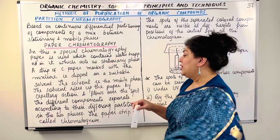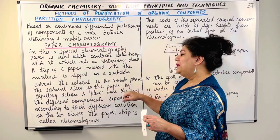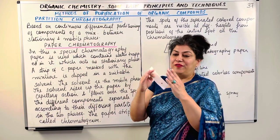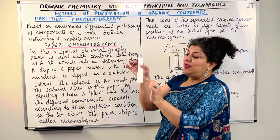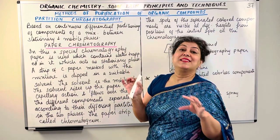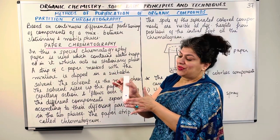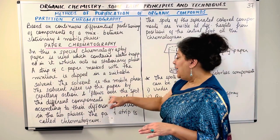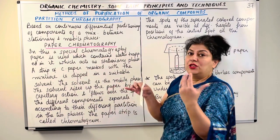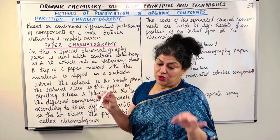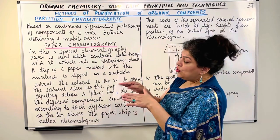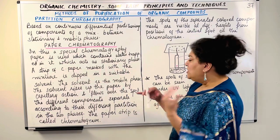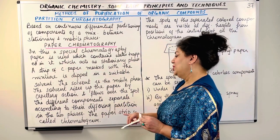The solvent is the mobile phase. As the solvent rises up the paper, it does so by capillary action. The paper is woven in such a fashion that the holes in each weave act as capillaries, so the solvent starts rising due to capillary action on the chromatography paper. It rises and flows over the spot. The spot consists of a compound soluble in the solvent — I chose water because this ink is soluble in water. You choose a solvent which dissolves the mixture, and then the mixture starts moving along with the solvent. The different components separate according to their differing partition between the two phases.